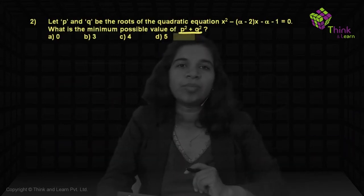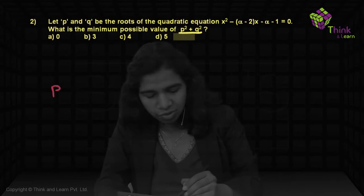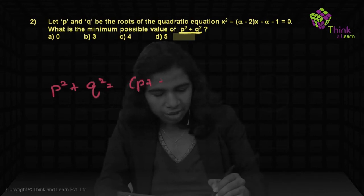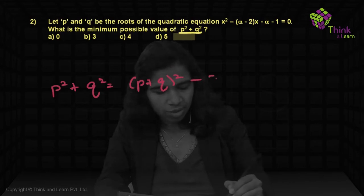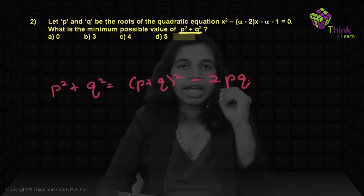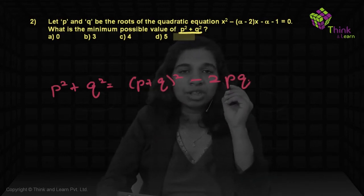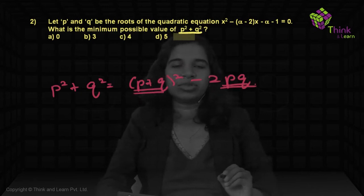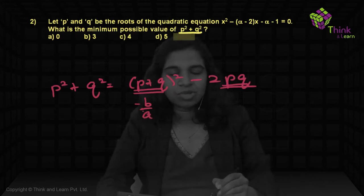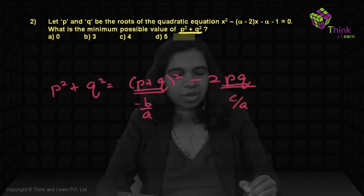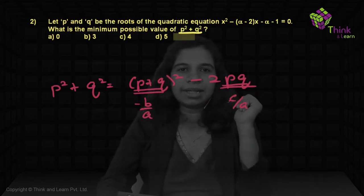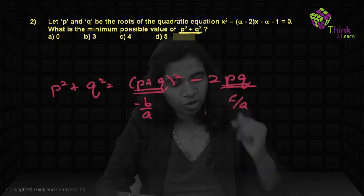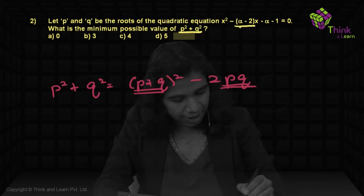The next question asks for the minimum possible value of p² + q², where p and q are roots. We rewrite p² + q² as (p + q)² − 2pq. This is useful because (p + q) is the sum of roots, which equals −b/a, and pq is the product of roots, which equals c/a. With a = 1, the sum of roots is (α − 2).